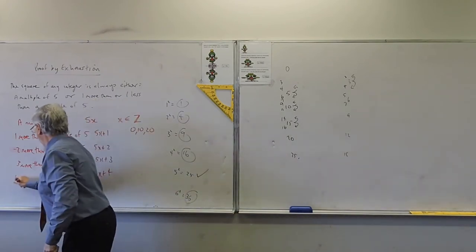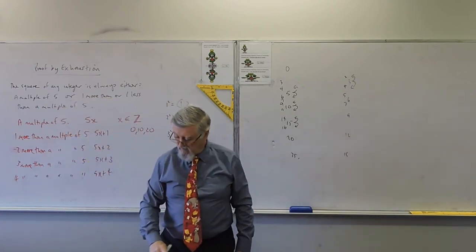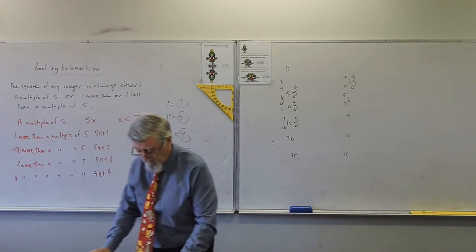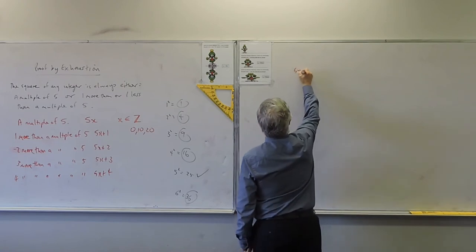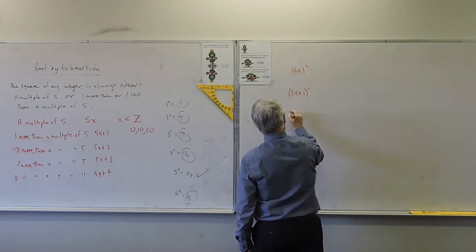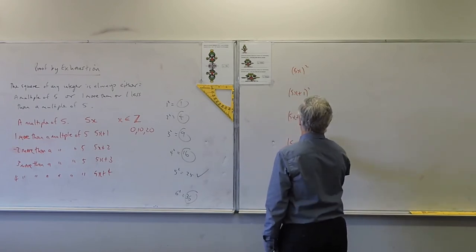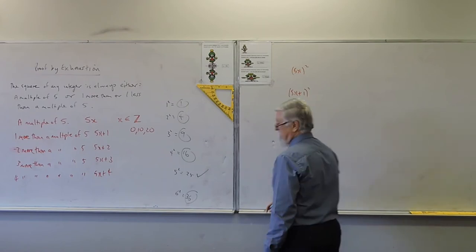We're going to try to prove with each of these things. Now we've got to square them. We're going to do it with 5X all squared. We're going to do it with 5X plus one all squared. We're going to do it with 5X plus two. And when I say we, that's you. And then we're going to do it with 5X. Expand them out and see what you've got.